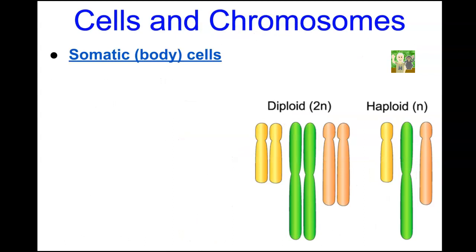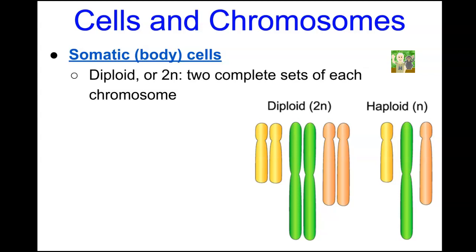There are two types of cells. Somatic cells are body cells and are diploid in chromosome number, abbreviated 2n. Being diploid means these cells have two complete sets of each chromosome — for humans that would be 46 chromosomes within the nucleus.